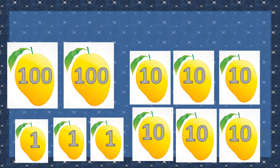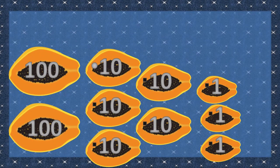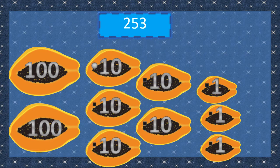How about these papayas? There are 2 hundreds, 6 tens, and 3 ones, so there are 263. How about these papayas? How many papayas do we have? There are 2 hundreds, 5 tens, and 3 ones. There are 253 papayas in this set.